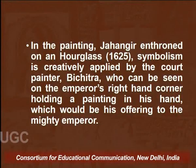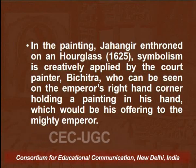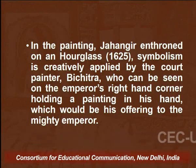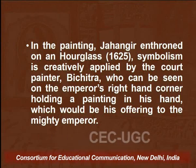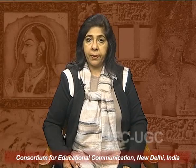In the painting Jahangir Enthroned on an Hourglass, made in 1625, symbolism is creatively applied by court painter Bichitra, who can be seen on the emperor's right hand holding a painting within a painting, probably his offering to the emperor. Persian calligraphy adorned the top and bottom, saying in verse that the Shahs of this world may stand before him as Jahangir prefers to have the Darwishis. A portrait resembling the Ottoman Sultan and King James I of England also stands on the right with gifts for the mighty emperor.